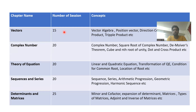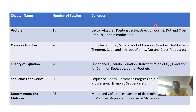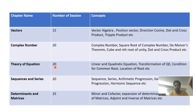First we'll be covering vectors — 15 sessions. Here we'll be learning vectors algebra, position vector, direction, dot product, cross product, triple product, etc. Then complex numbers — 20 sessions — where we'll learn complex numbers, square root of complex numbers, theorems, cube and nth root of unity, and product. Theory of equations — 20 sessions — covering linear and quadratic equations, transformation of quadratic equations.